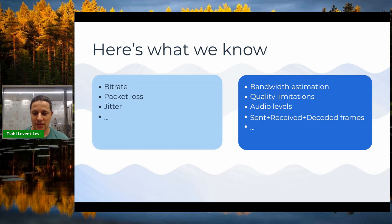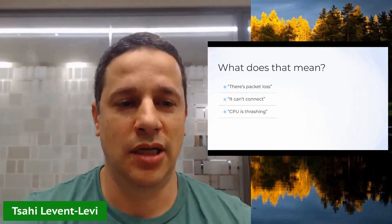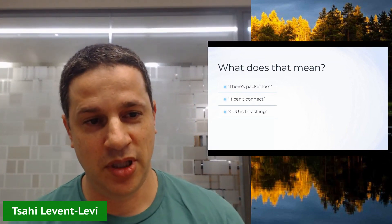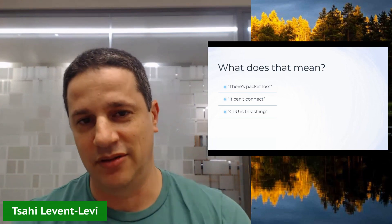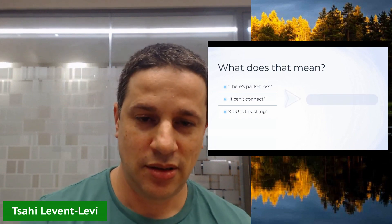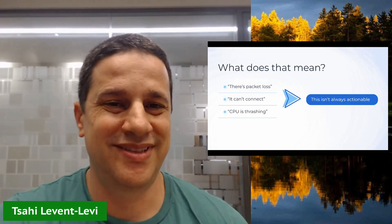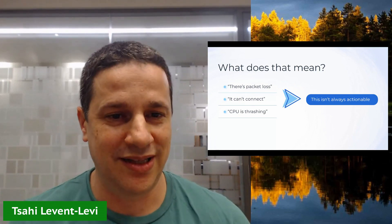Once you understand what's on the peer connection, you can answer things like: there's packet loss, or the user can't connect because ICE messages didn't flow, or the CPU is thrashing. But this isn't always actionable — if you tell someone there's packet loss, what does that mean exactly? Is it on their end or yours? What should they do to improve it?